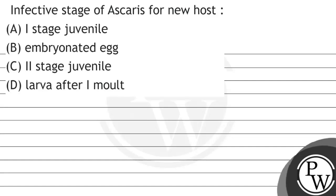Hello, Bacho. Let's read the question. Infective stage of Ascaris for new host: option 1, first stage juvenile; option 2, embryonated egg; option 3, second stage juvenile; and option 4, larva after first mold.